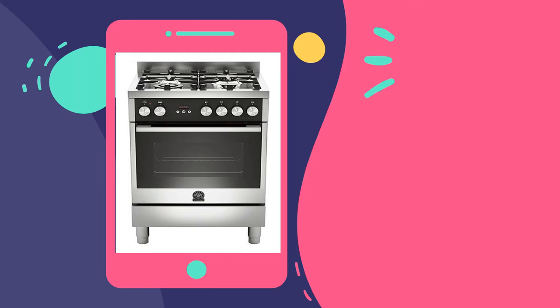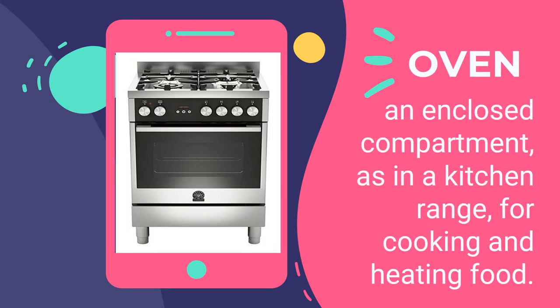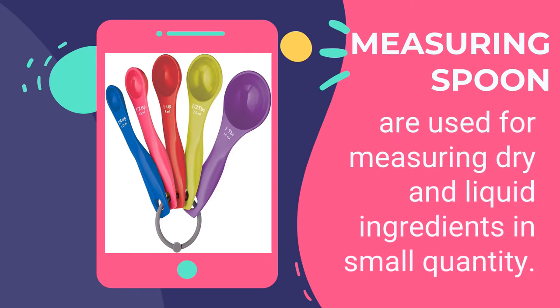The oven is an enclosed compartment in a kitchen range for cooking and heating food. It is a thermally insulated chamber used for heating, baking, or drying substances. Different baked appetizers you can prepare include cheesy zucchini bites, bacon wraps, jalapeño poppers, mini pizza, and muffin tin taco pies. Measuring spoons are used for measuring dry and liquid ingredients in small quantities, and are available in many sizes including teaspoon and tablespoon.